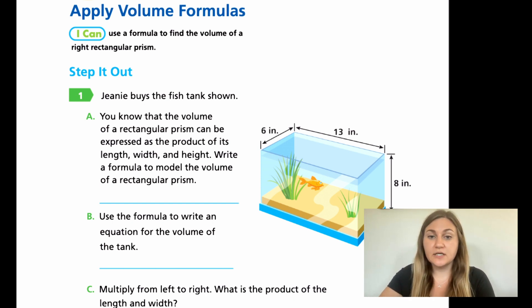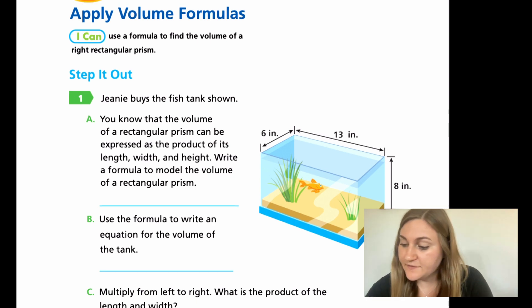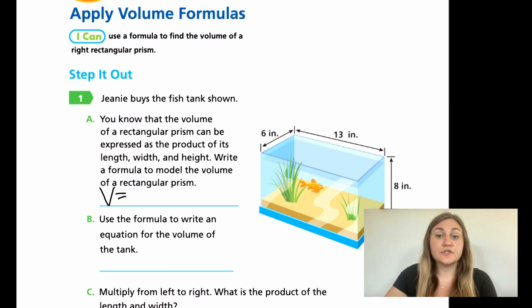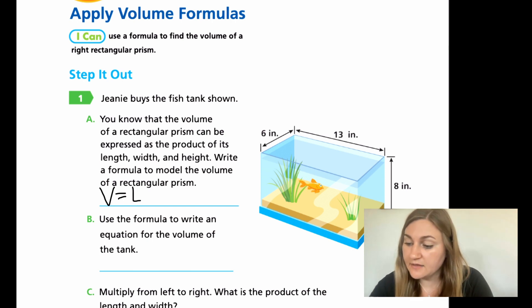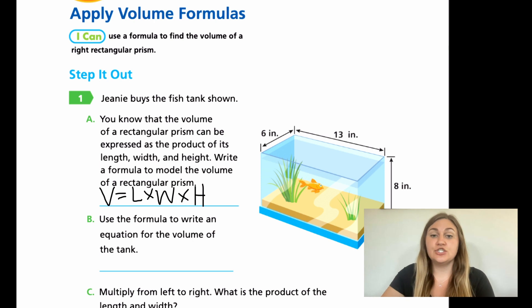So what it's looking for here is the letters. What letters in the formula can we write that make up the formula itself? So what that's going to look like here is V is for volume. And remember it said the product, which is multiplication, of its length, width, and height. So we're going to take the first letter of each of those words, length, and we're going to multiply them together. Length times width times height. So that is a general formula for a rectangular prism.